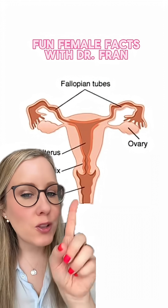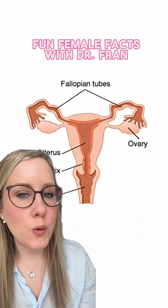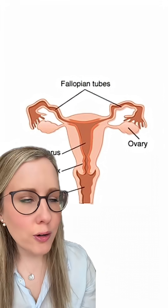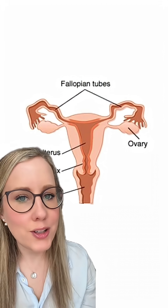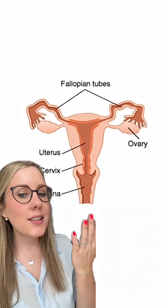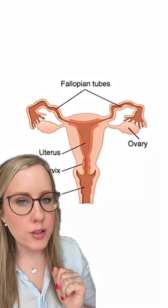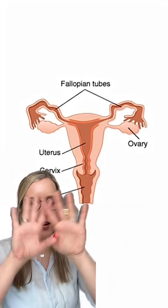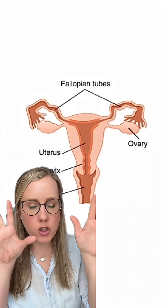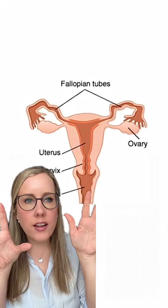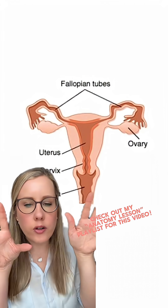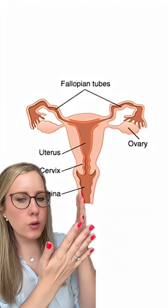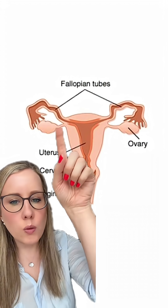Welcome back to the health education class you wish you had when you were in high school. Today we're going to talk about what your ovaries are actually attached to. This is the picture that you're used to seeing — this is kind of a splayed-out picture. In reality, your ovaries and your uterus are all slumped down into your pelvis, but this is what we're used to seeing.